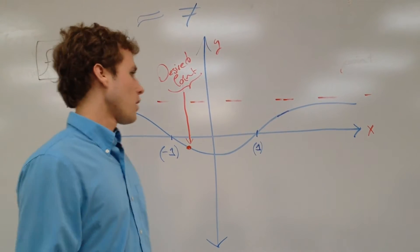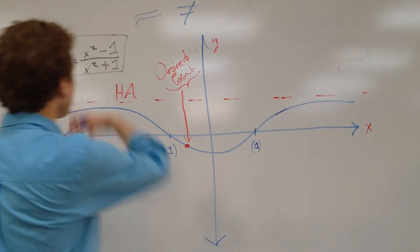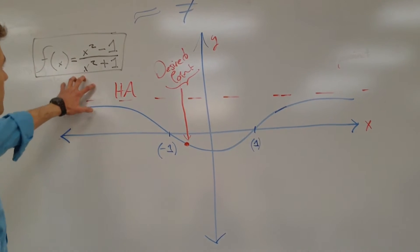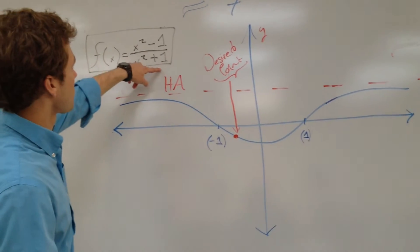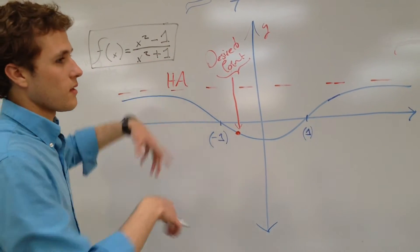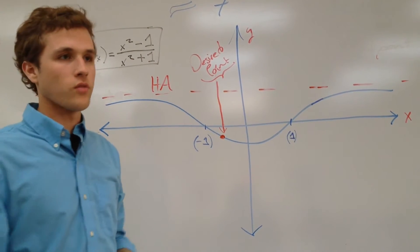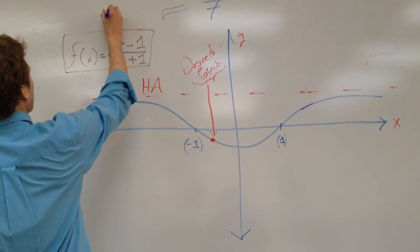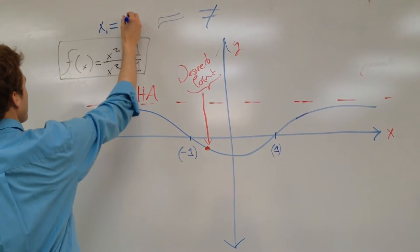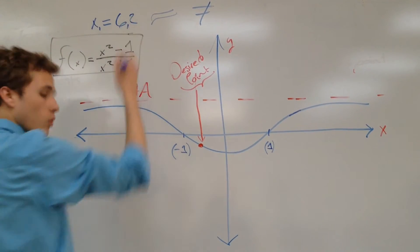So when you see problems dealing with Newton's method, you'd be given an equation, and it would say something like, take this, find the value of this point with this equation, giving initial value x1 equals 6, or 2, or whatever you have, it would just depend.